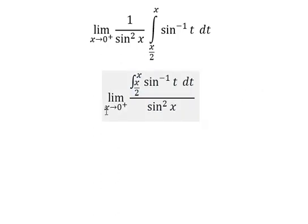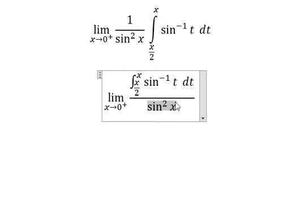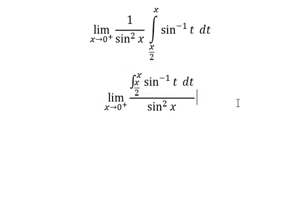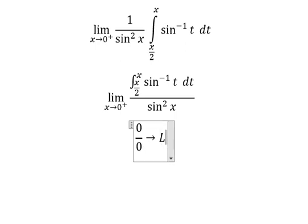When x approaches zero, we put number zero in and we get the sine of zero. The sine of zero gives us zero, and if we put zero here and here, we have the integral from zero to zero, so this equals zero. That means we have zero over zero, so we can use L'Hôpital's rule.